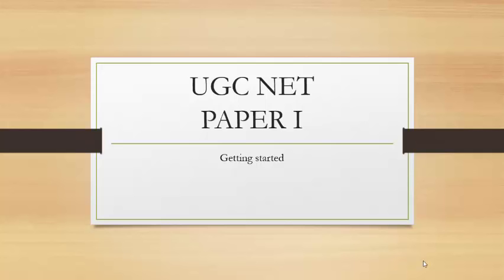Hello everyone, we are going to cover UGC NET Paper 1 in the coming subsequent videos. Paper 1 is a general paper on teaching and research aptitude, in which they are trying to assess a candidate's comprehension, analysis, evaluation, understanding of argument, and understanding of deductive and inductive reasoning. In this particular video, we will only cover a high-level view on teaching.